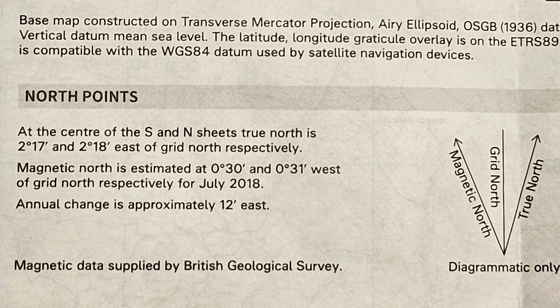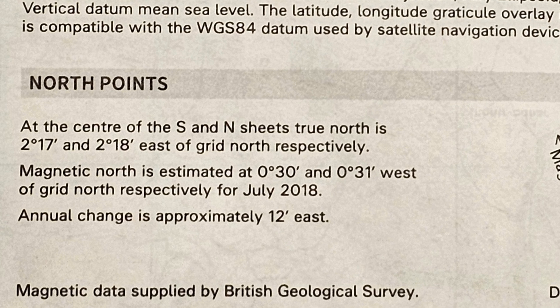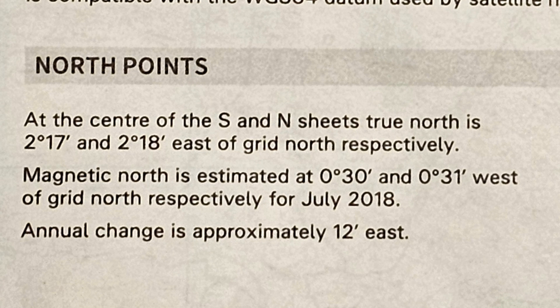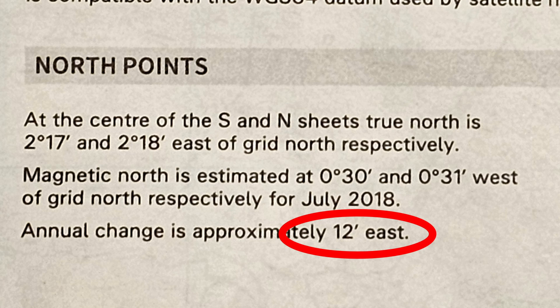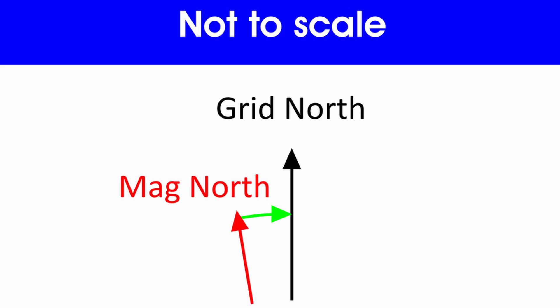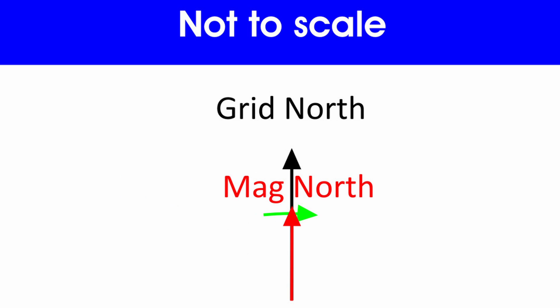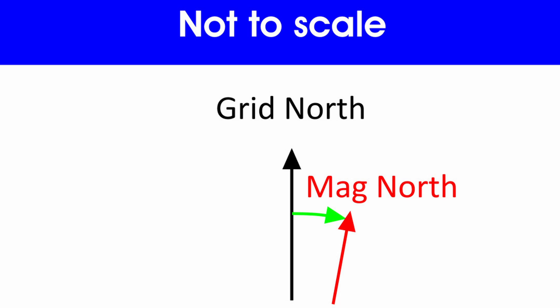As an example, we can see on this map of Ben Lomond in the Scottish Highlands it was printed in July 2018, and at the time the declination was 0 degrees 30 minutes west, with an expected yearly change of 12 minutes east. Since we started with a westerly declination, it will decrease towards zero and then continue eastwards by 12 minutes each year.